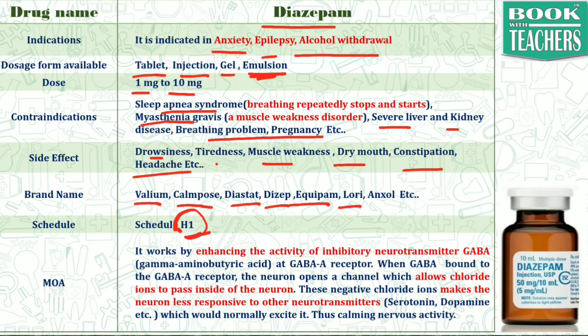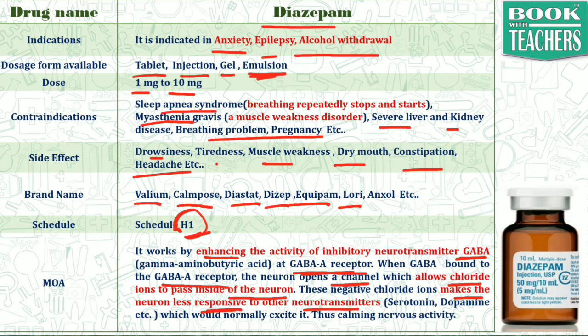Now we will see the mode of action — how Diazepam works. It enhances the activity of the inhibitory neurotransmitter called GABA at the GABA-A1 receptor. When GABA is bound to the GABA-A1 receptor, the neuron opens a channel which allows chloride ions to pass inside the neuron. These negative chloride ions make the neuron less responsive to other neurotransmitters such as serotonin and dopamine, which would normally excite it, thus calming of the nervous activity takes place.